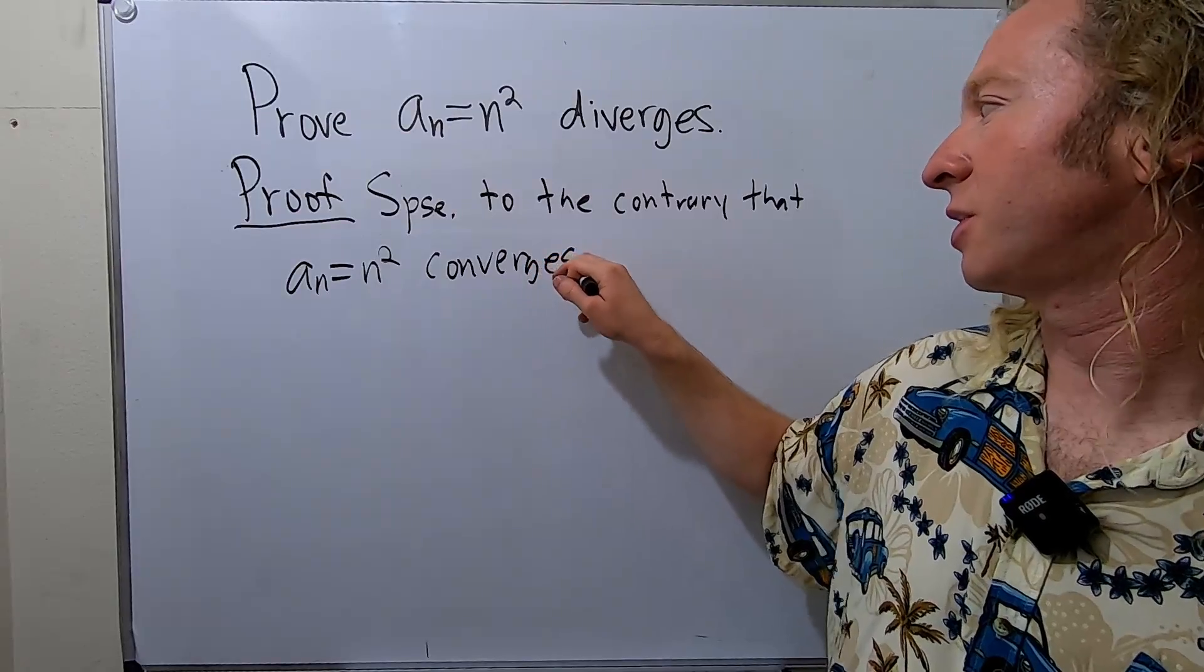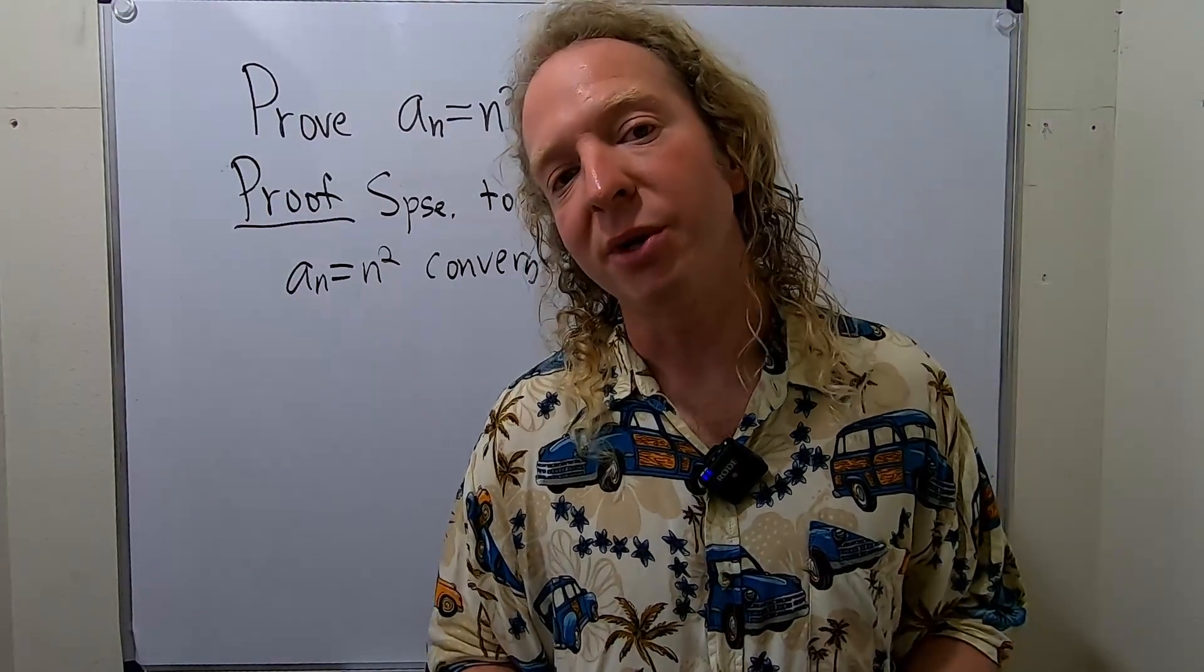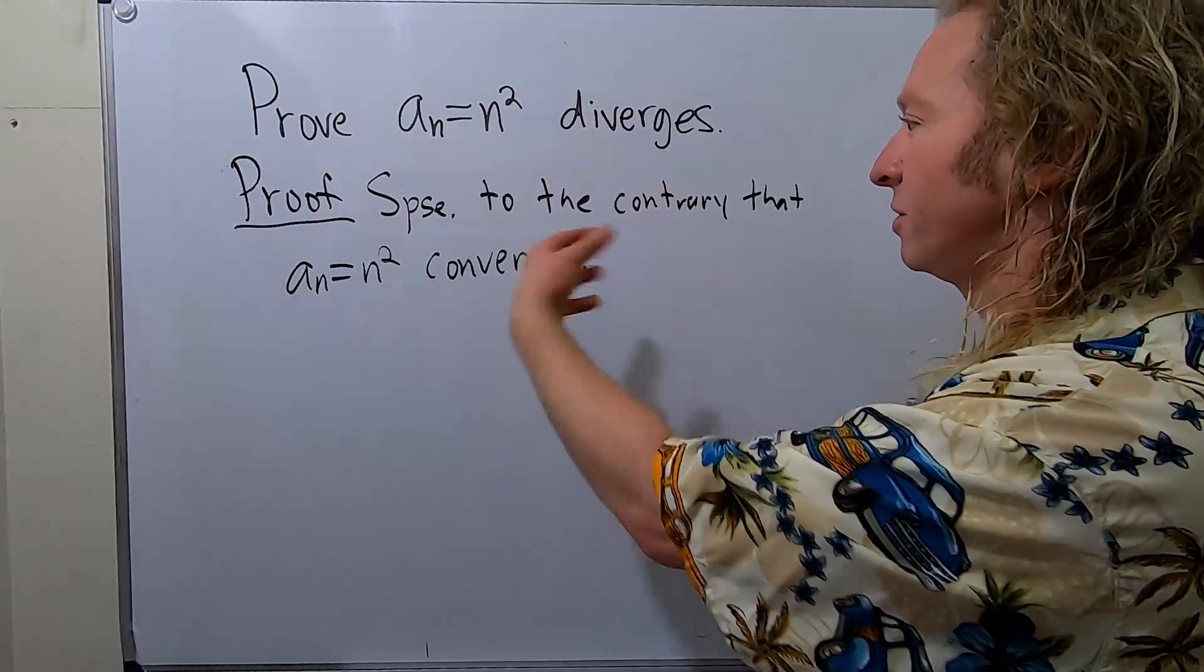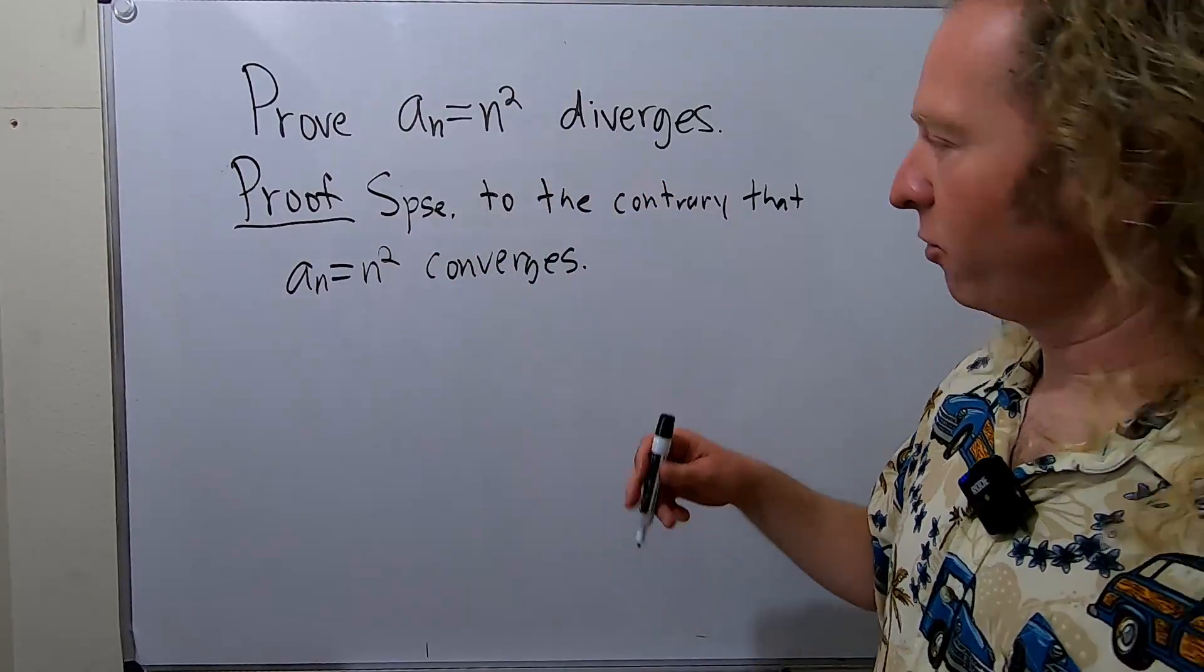Now we have to somehow reach a contradiction. What we're going to do is use the fact that every convergent sequence is bounded. So in particular, this sequence converges, therefore it is bounded.